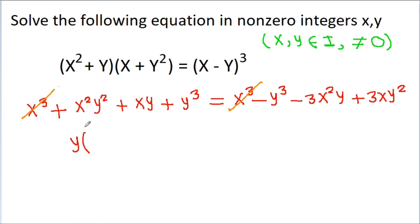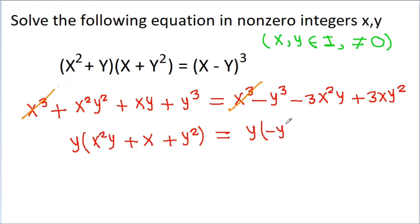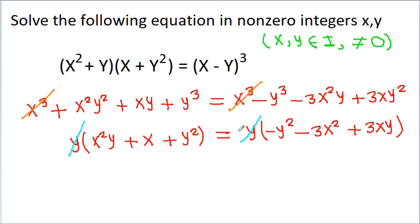We take y common and get x squared y plus x plus y squared is equal to, taking y common on the right side, minus y squared minus 3x squared plus 3xy. And we know that y is not equal to 0, so we can cancel y from both sides.